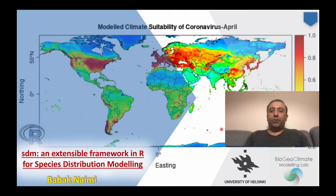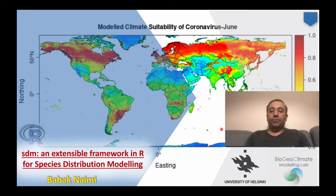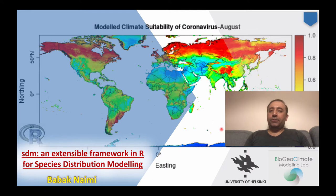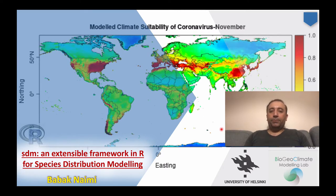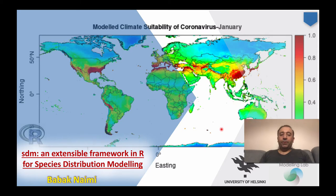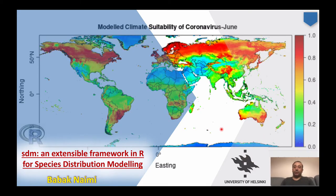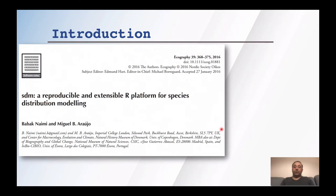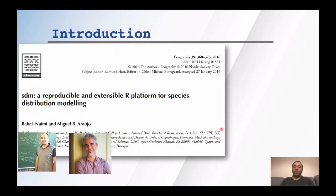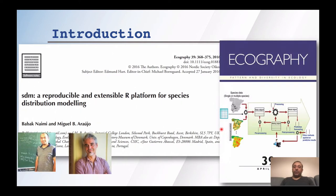Hello everyone, this is Bob Naini. I'm working in the BioGeo Climate Modeling Lab at the University of Helsinki. As part of ENM 2020, I'm going to talk about SDM, an R package for species distribution modeling. This package was published as a software note in the Journal of Ecography by me and Miguel Araujo as a cover paper. I'm still actively developing the package and including new functionalities.